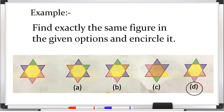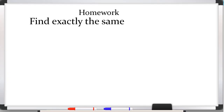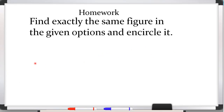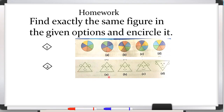You have to do the same type of sums which I am giving you in your homework. In homework, find exactly the same figure in the given options and encircle it. Question number one: these shapes are given — this is the original figure and you have to find out the same figure. Question number two: this is the original figure and you have to find out the same figure.